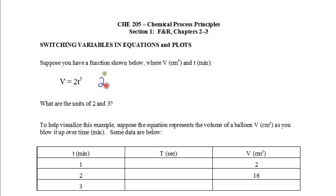So the coefficient 2 is actually in units of centimeters cubed per minutes cubed. And the reason why you know that is because it has to cancel out the t cubed, which is minutes, and give you centimeters cubed, which is volume on the other side. Now the 3, which is the exponent, has to be unitless because it doesn't make sense to raise anything to a power of something that has units.